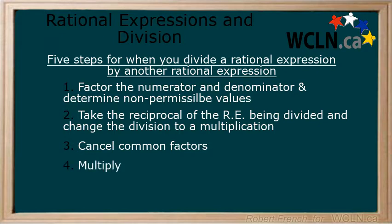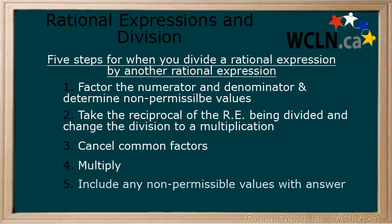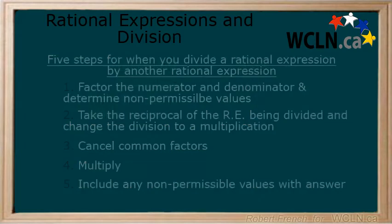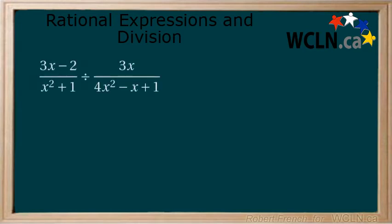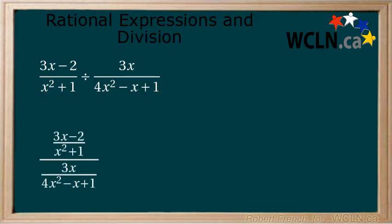Step 4: Multiply. Step 5: Include any non-permissible values with your answer. There are two ways you may come across division. The first is with a division symbol as seen here. This is one you should be very familiar with at this point. The second you have seen before but it may have been a while.